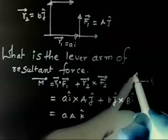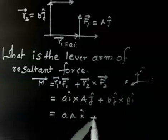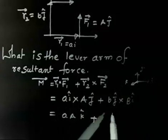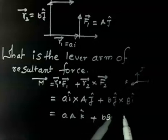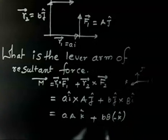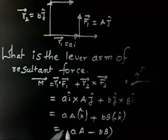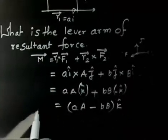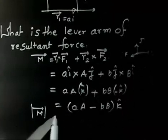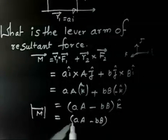Remember the cyclic rule: I cross J is K, and J cross I is minus K. So BJ cross BI gives B squared times (J cross I) which is minus B squared K. Therefore the total moment is (A squared minus B squared) K, and the magnitude of the moment vector is |A² − B²|.